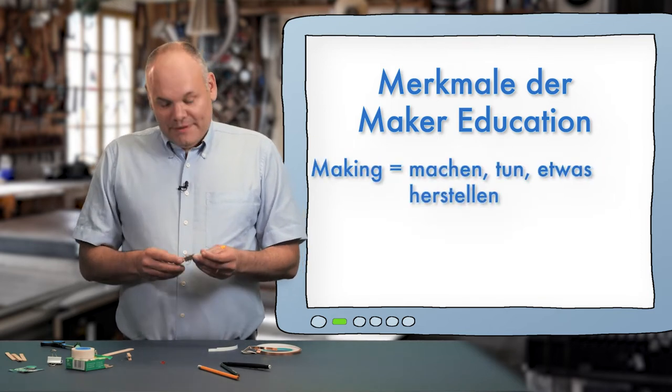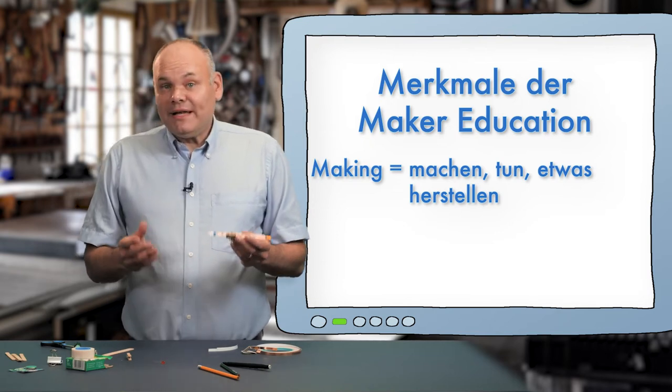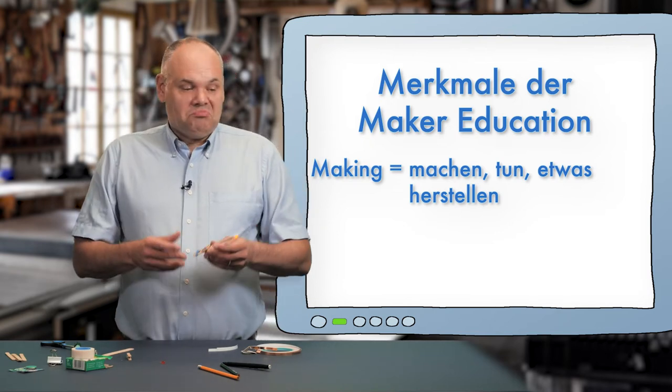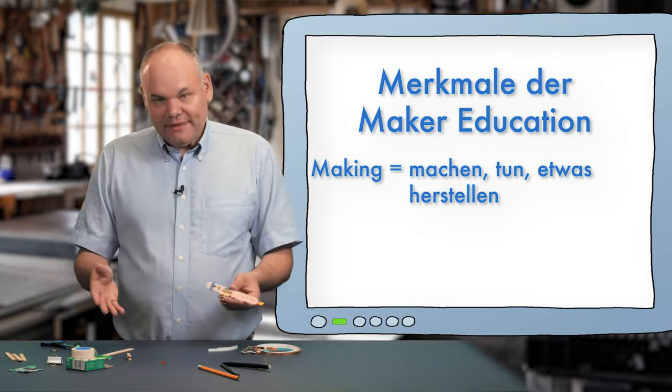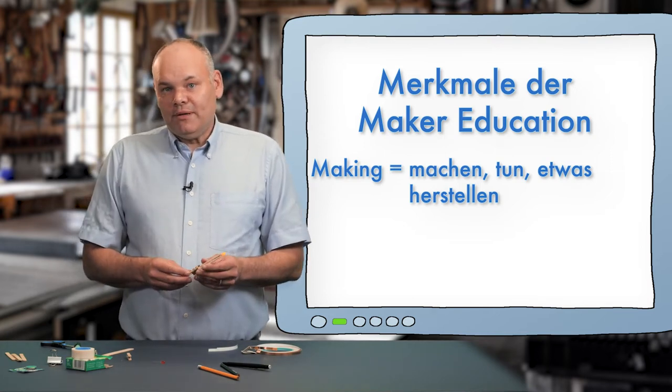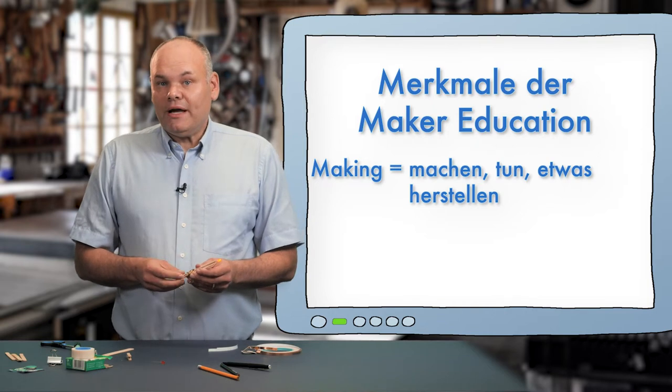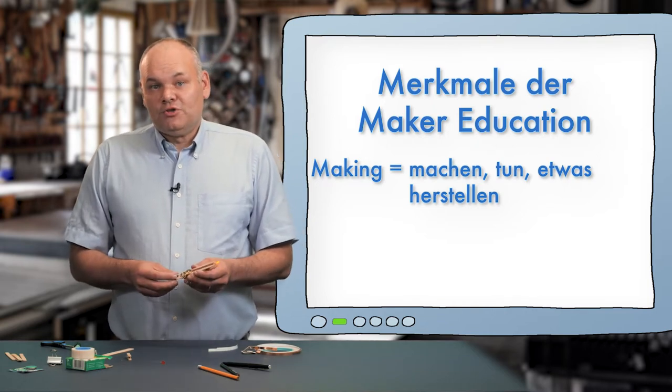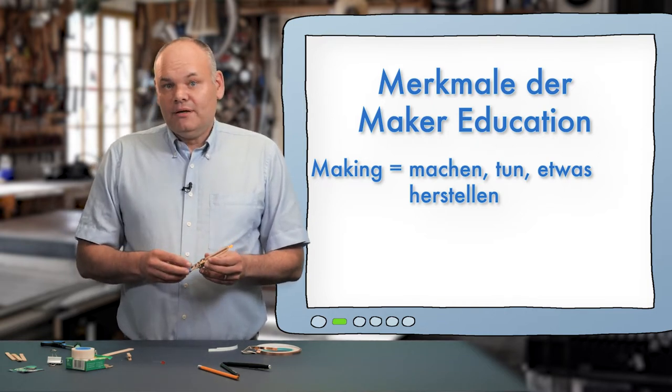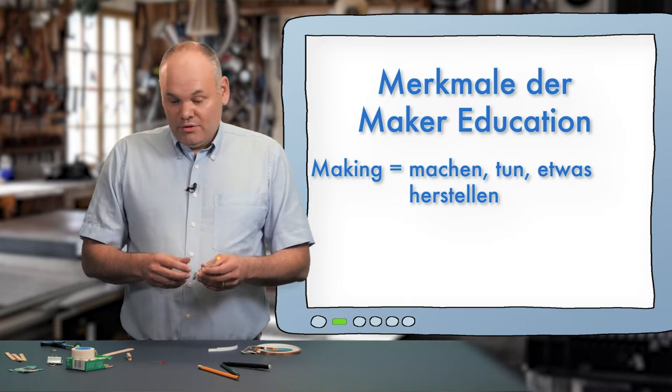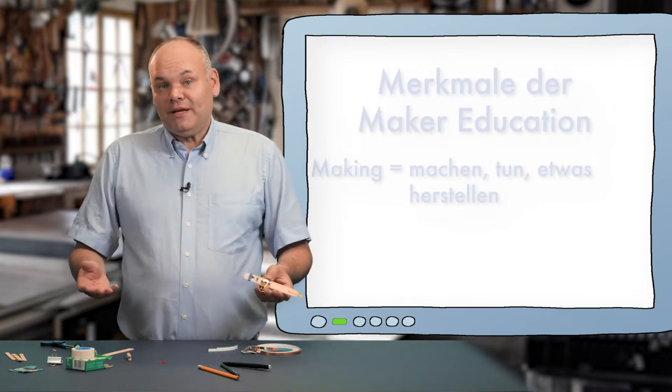Diese Taschenlampe ist ein Beispiel dafür, wie Kinder anhand einer konkreten Anleitung mit sehr kostengünstigen Materialien Erfahrungen mit dem Bau eines sehr einfachen Stromkreises sammeln können. Solche kleinen LED-Beleuchtungen lassen sich dann später auch auf andere Erfindungen und Kreationen anbringen.